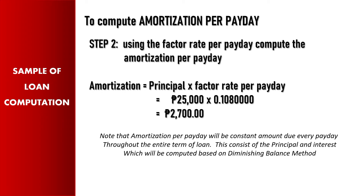Using the factor rate per payday, compute the amortization per payday: principal times factor rate per payday. For the short-term loan, we have 25,000 principal multiplied by the factor rate per payday of 0.108. So the amortization per payday is 2,700. Note that the amortization per payday is the constant amount due every payday throughout the entire term of the loan, consisting of principal and interest computed based on the diminishing balance method.